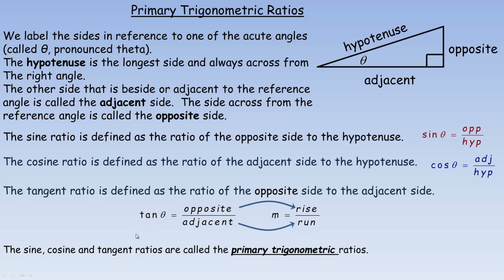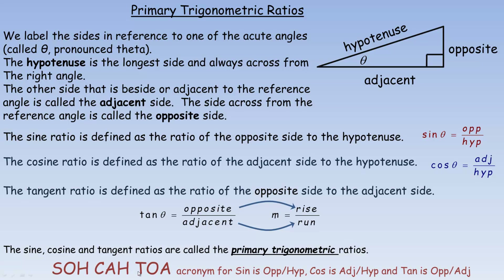The sine, cosine, and tangent ratios are called the primary trigonometric ratios. Here's a way to remember them: SOH-CAH-TOA — S-O-H, C-A-H, T-O-A. SOH means sine is opposite over hypotenuse; CAH means cosine is adjacent over hypotenuse; and TOA means tangent is opposite over adjacent. Just remember how to spell SOH-CAH-TOA and you'll remember which ratio is which.